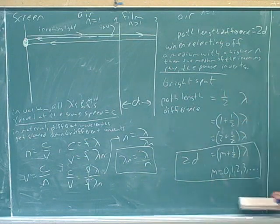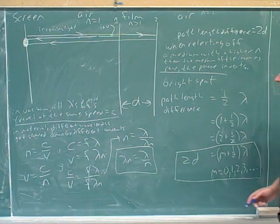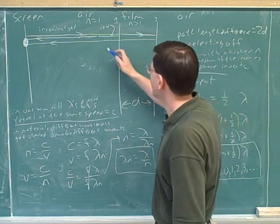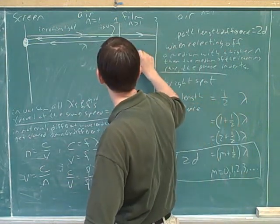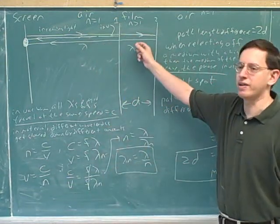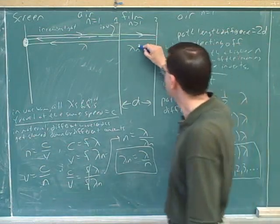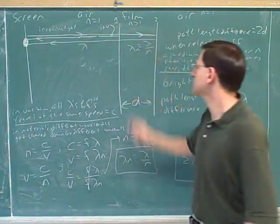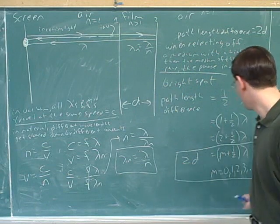So what I forgot in the equation here is when we're moving through the film, we don't have a wavelength of lambda. When we're in the film, our wavelength is this new wavelength because we're in the film, which is smaller than the old wavelength. We have to divide that by N.